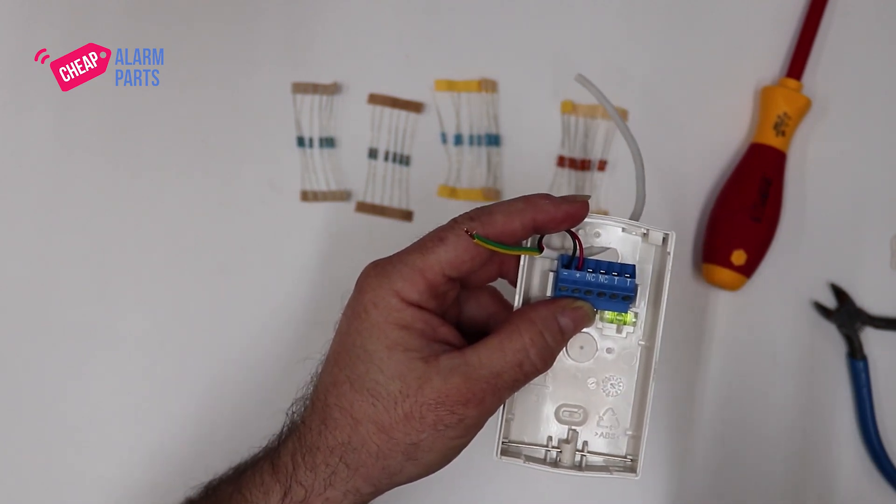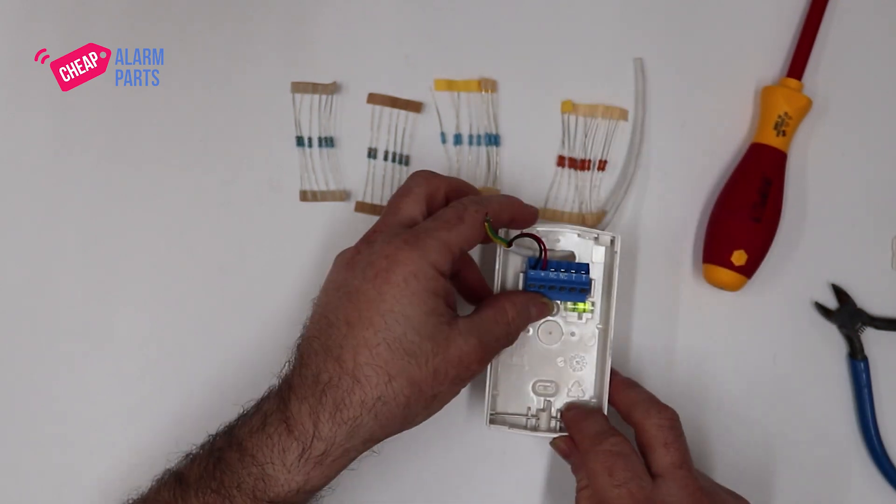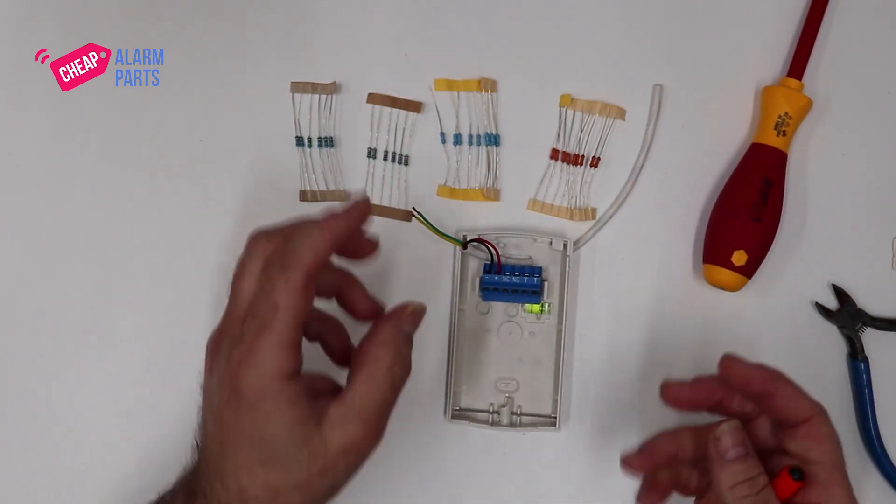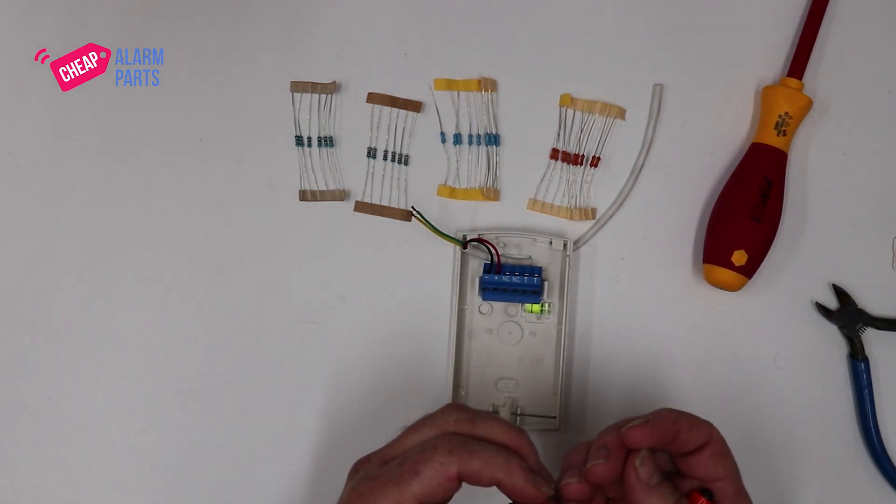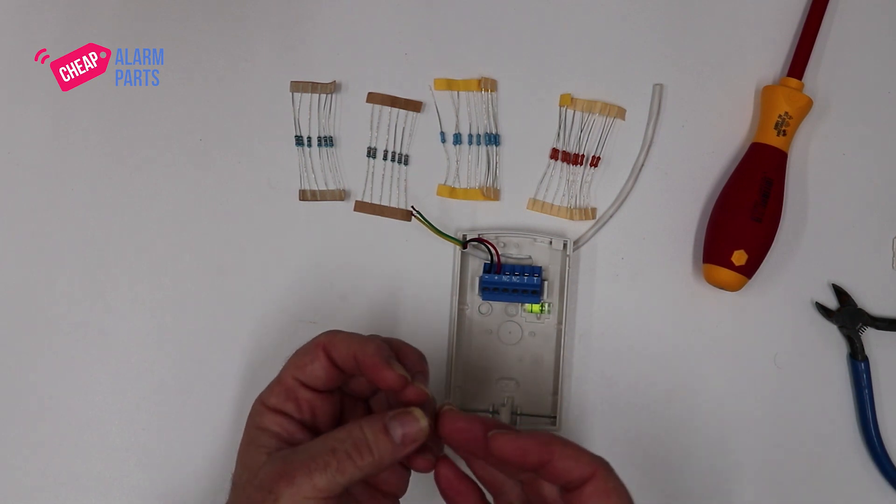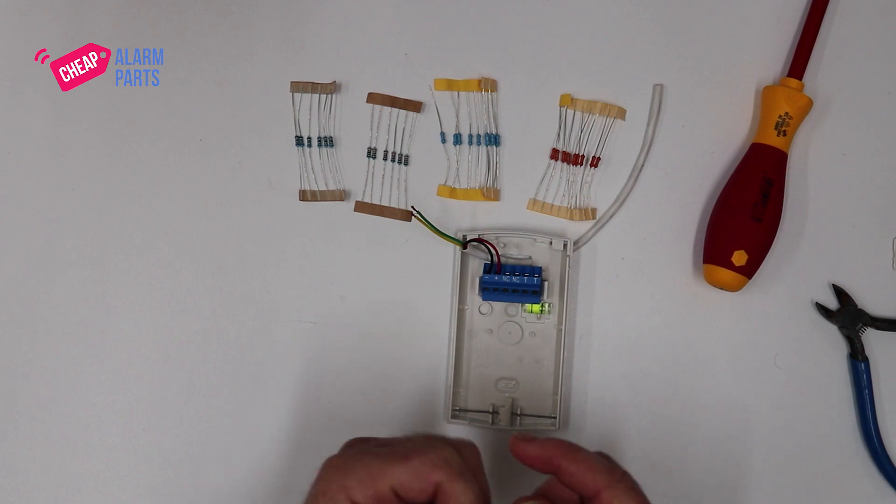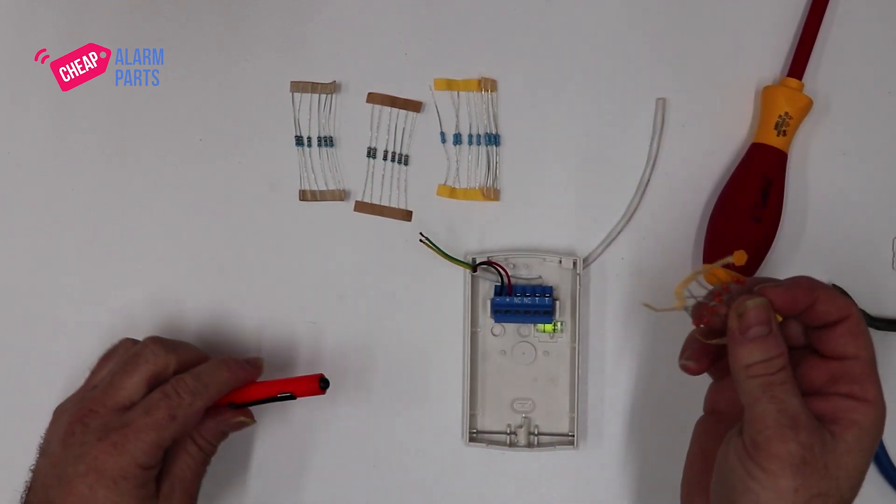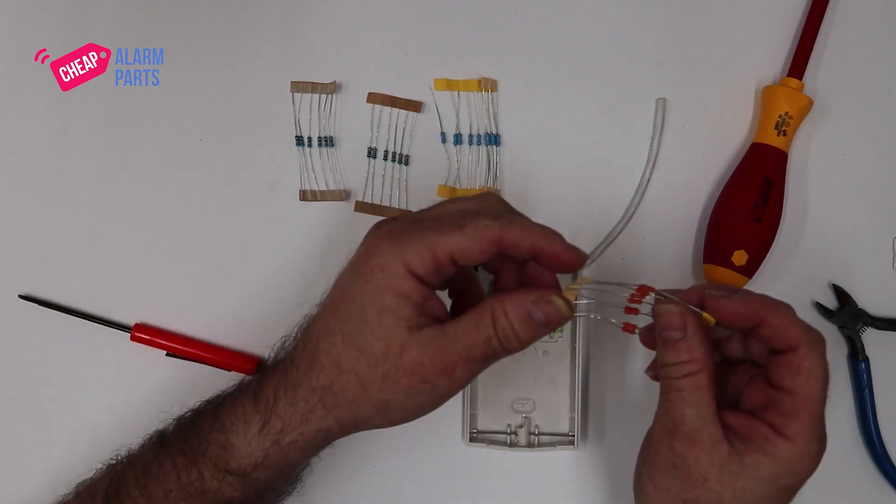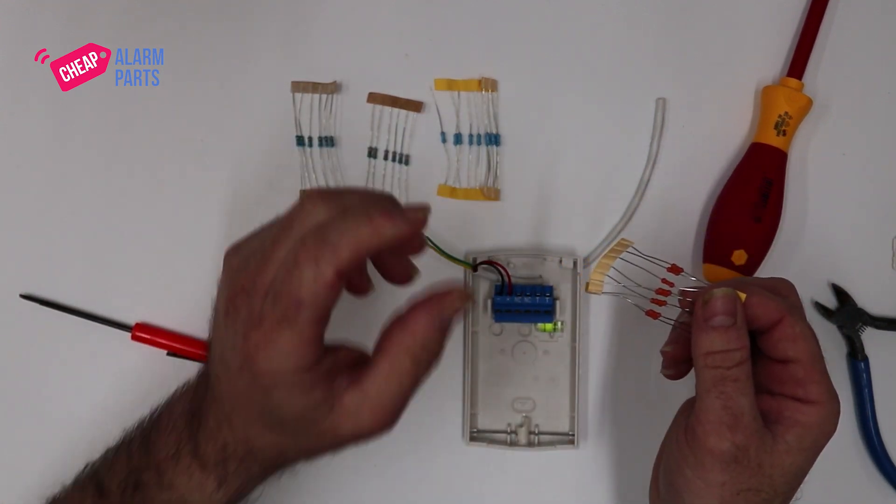Now, each sensor needs a resistor, and this is what the alarm panel is actually looking for. It protects your cabling. If someone shorts out your cabling, the resistance of the alarm circuit loop becomes zero. If someone cuts the cable, the resistance becomes infinite or open circuit. Only when the resistor is connected properly and not seeing movement does the alarm see the 3.3k or 6.8k resistance of the alarm loop.